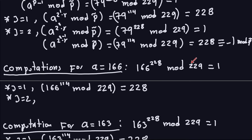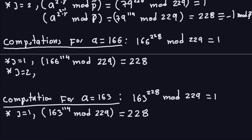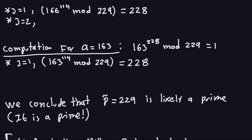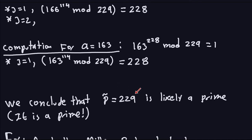For 166 and 163, you will have to do the same thing, and they will end up with the same conclusion — meaning I can't conclude that they're composite. Because I went through the whole algorithm and couldn't conclude it's composite, the number is likely a prime. So the conclusion is: we conclude that 229 is likely a prime — and it actually is a prime. The test didn't lie in this case. Remember, this is really applied for large primes, and that's why you need fast modular exponentiation to make the Miller-Rabin test faster.